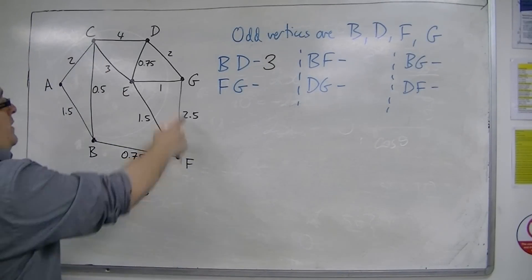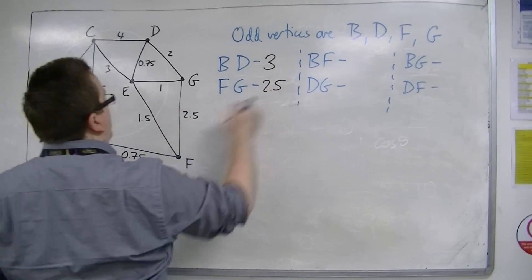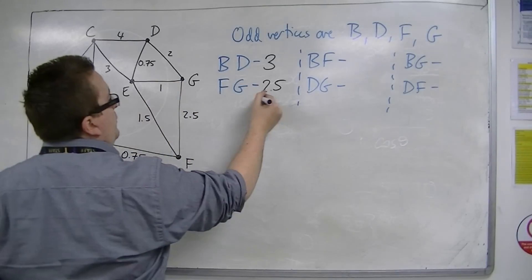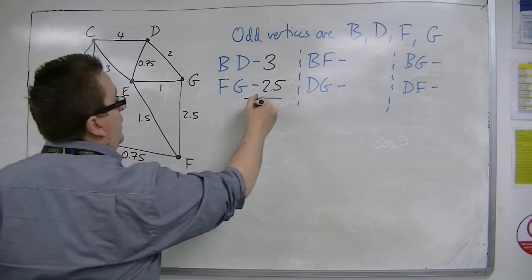Then we've got F to G, well, that's 2.5. There's also that route there, but it's still 2.5. So together, that would be 5.5.